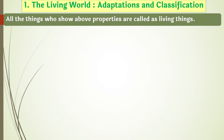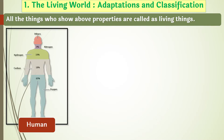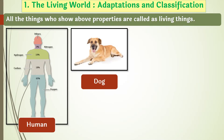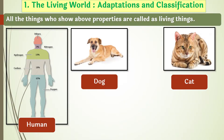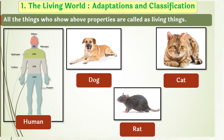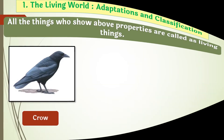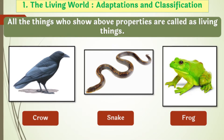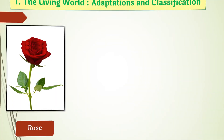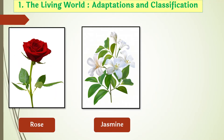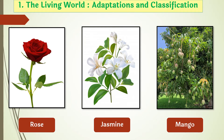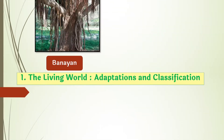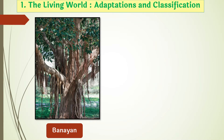All the things that show the above properties are called living things, like humans, animals like dogs, cats, rats, crows, snakes, and frogs, and plants like rose, jasmine, mango, banyan, and apple.